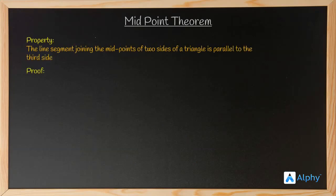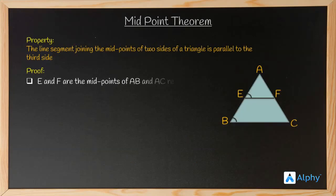So we will prove it here mathematically. Let's bring in our triangle into the picture. Now as we already know, E and F are the midpoints of AB and AC respectively. Next we will be drawing CD parallel to BA and extend EF till D as you can see in the figure.